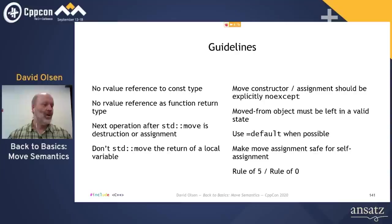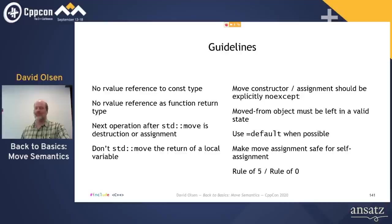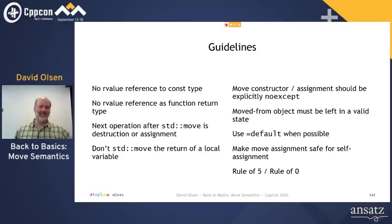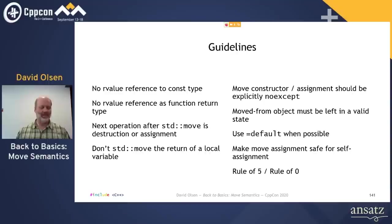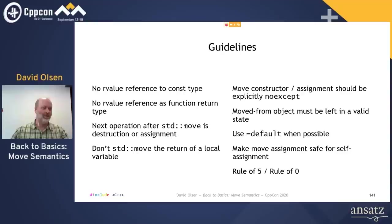Next question: Were universal references explicitly designed as such, or are they just a consequence of R-value references that happen to be useful? They were specifically designed as such. Universal references don't actually exist as a named feature in the language specification — they're a consequence of how function template argument deduction happens in the presence of references, especially both L-value and R-value references. But yes, that feature was designed to be a universal reference; you'll have to study it somewhere else if you want to know more.